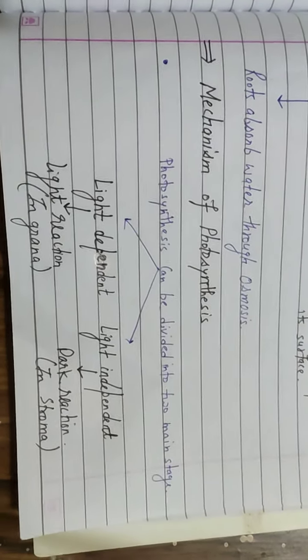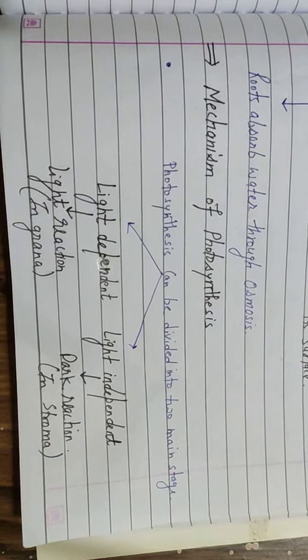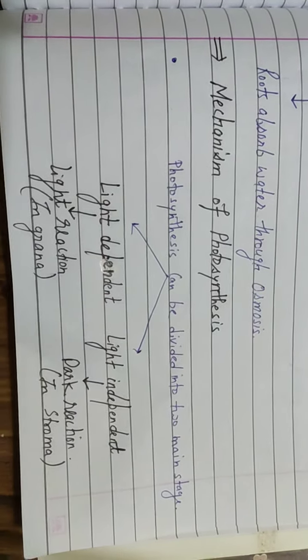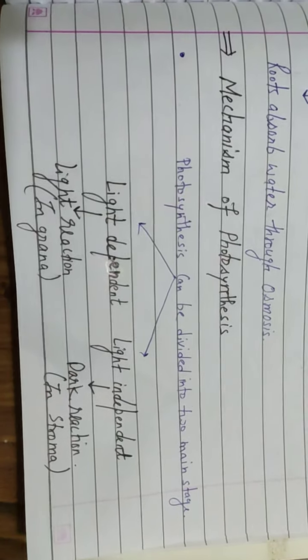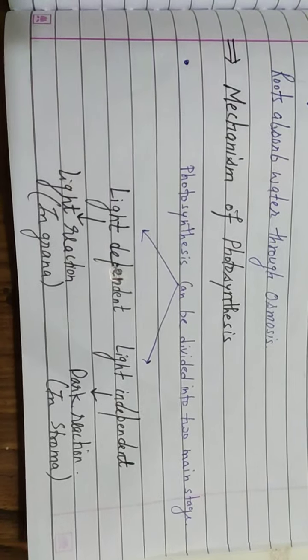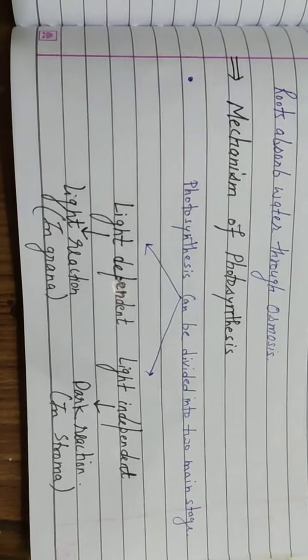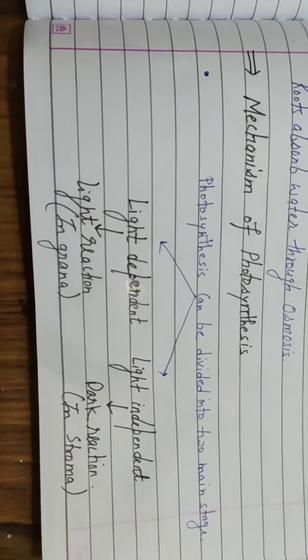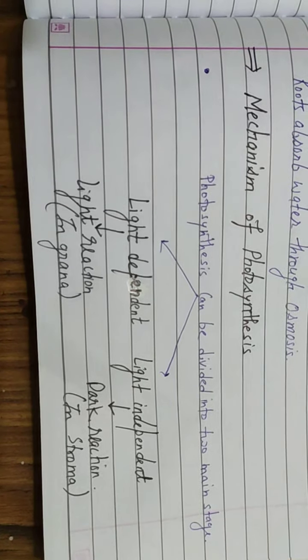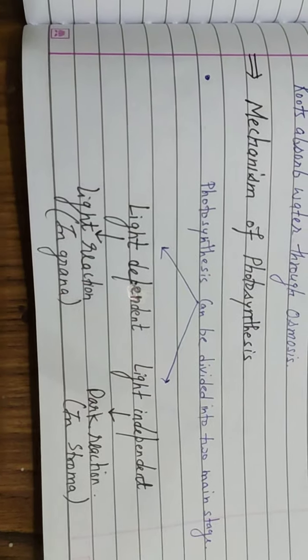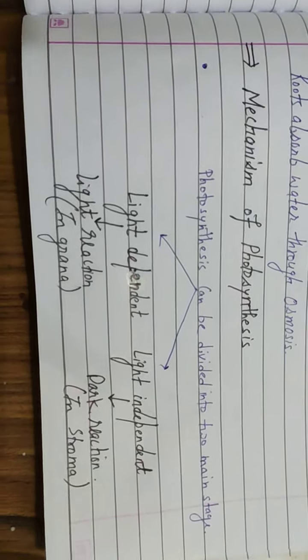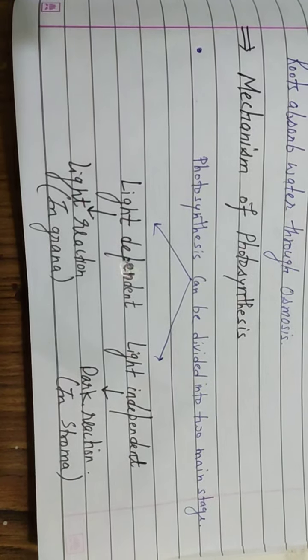After that comes the mechanism of photosynthesis. Photosynthesis is divided into two stages. First one is light dependent which is dependent on the light. Second one is light independent which is in the absence of light. Light dependent is known as light reaction, it takes place in grana. Light independent reaction is known as dark reaction, it takes place in stroma.